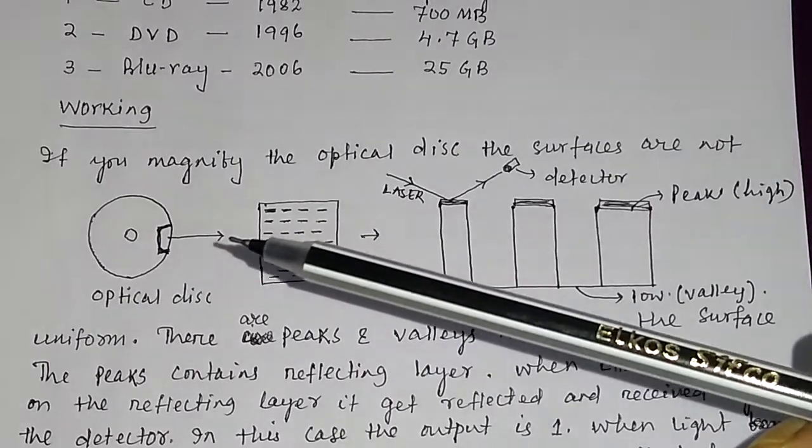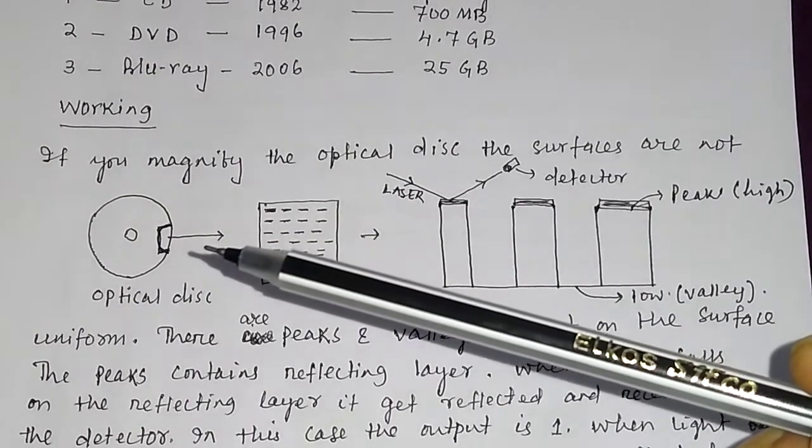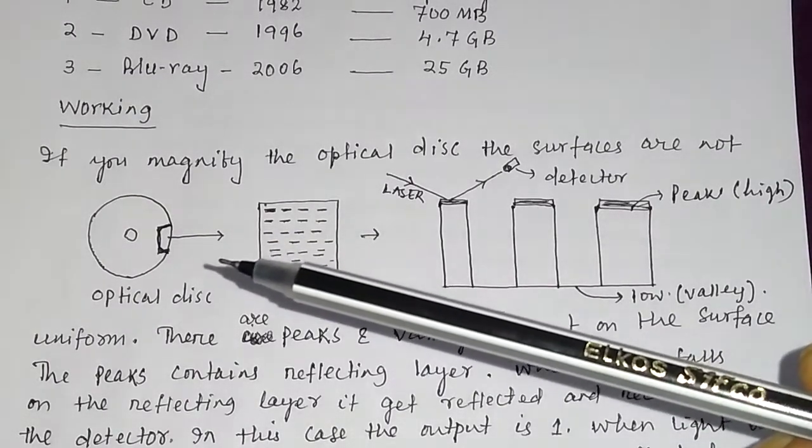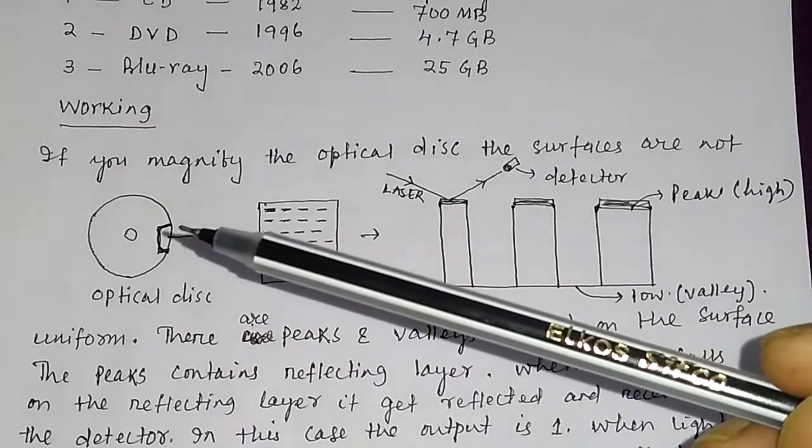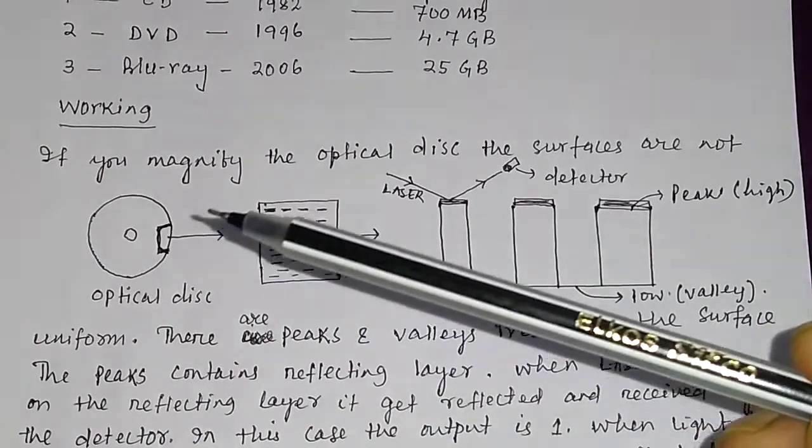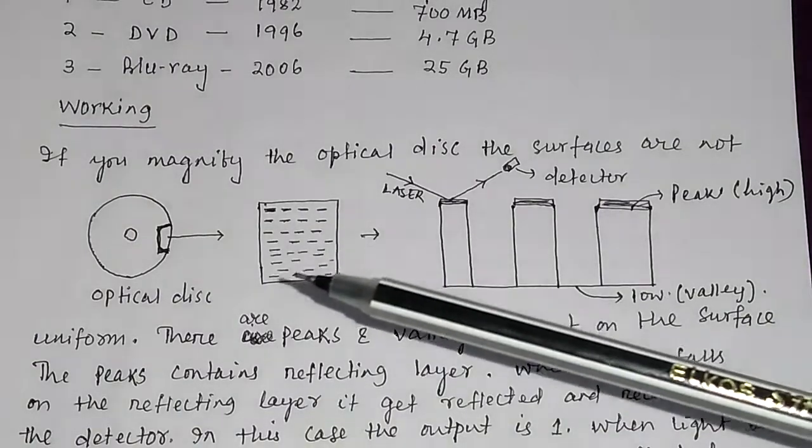If you magnify the optical disk, the surfaces are not uniform. I have magnified this small section of this disk. Suppose this is the magnified section.